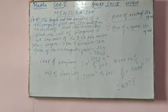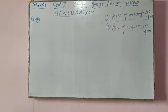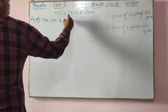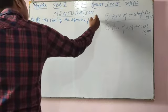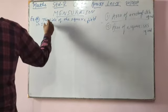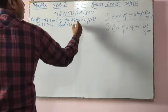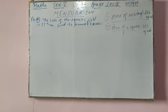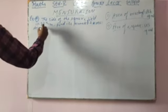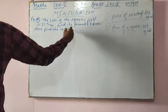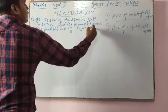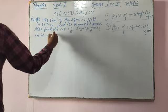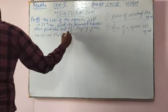Now come to example number 4. The side of the square field is given as 125 meters. Find its perimeter and area, and also find the cost of laying grass at rupees 0.30 per square meter.